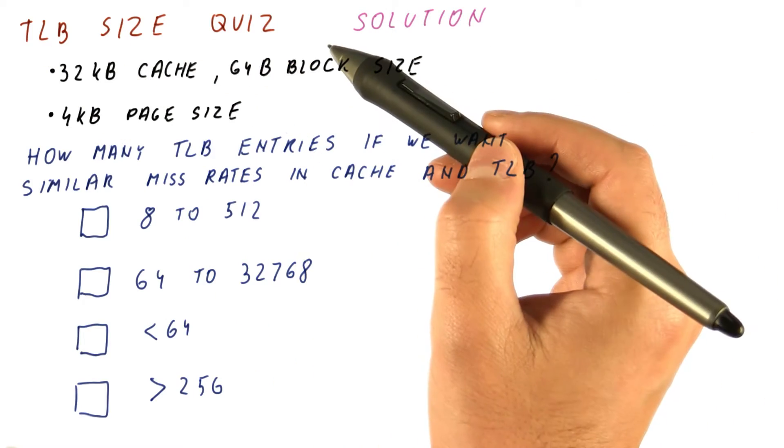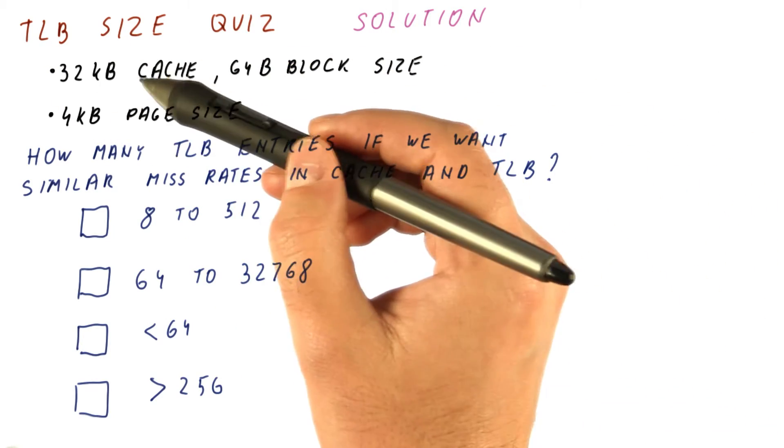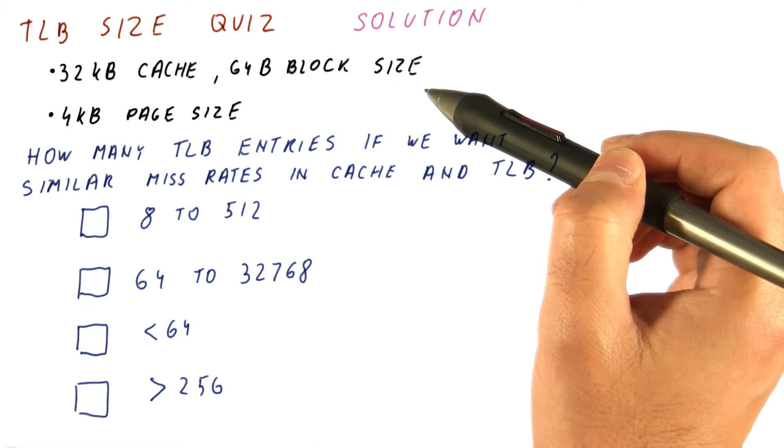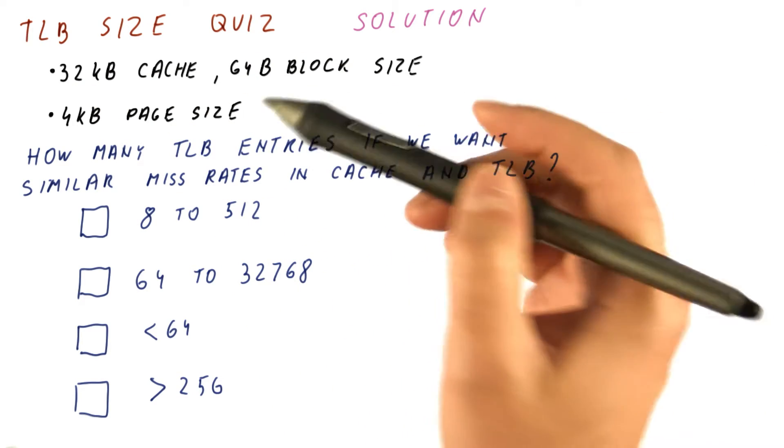Let's look at the solution to our TLB size quiz. We have a cache that is 32 kilobytes in size and has a 64 byte block size. We have a 4 kilobyte page size.